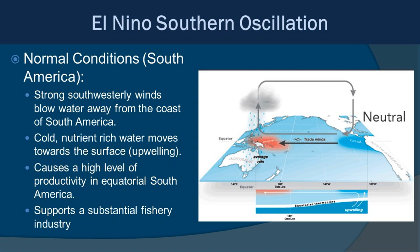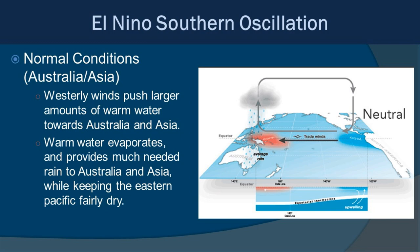To understand how El Niño works, we first need to look at normal conditions in the Pacific. Generally, there are strong southwesterly winds that blow water away from the coast of South America, allowing for upwelling of cold, nutrient-rich water to the surface along the coastline — causing high productivity and supporting a diverse fishery. Also under normal conditions, westerly winds push a large amount of warm water towards Australia and Asia, where that warm water evaporates and provides needed rain, while keeping the eastern Pacific relatively dry.